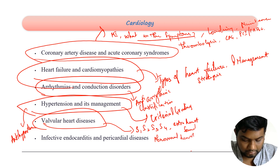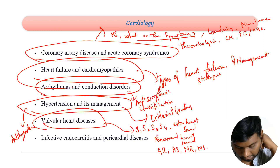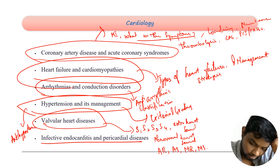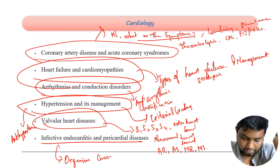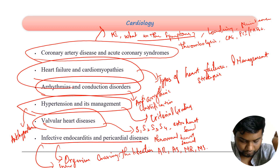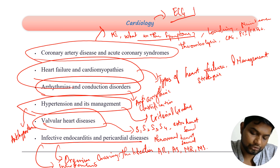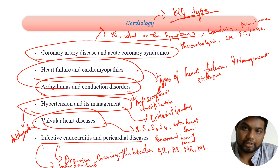AR, AS, MR, MS — all valvular diseases are important. Then you have infective endocarditis and pericardial diseases: all the types, organisms causing infective endocarditis and pericarditis, type of infections, and what type of interventions you will do. This covers the entire cardiology section, and along with that you have to remember all types of ECG in cardiology — all types of ECG are pretty important.